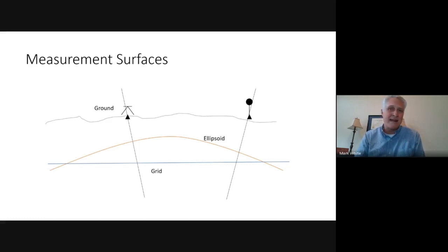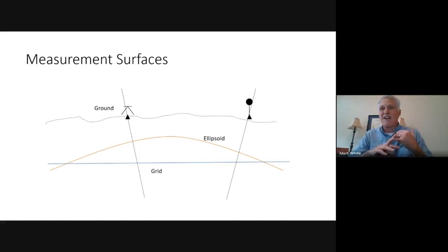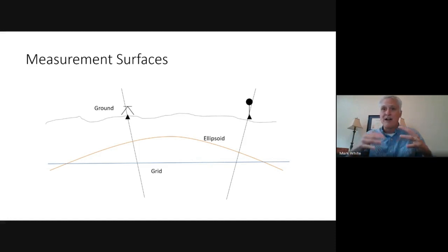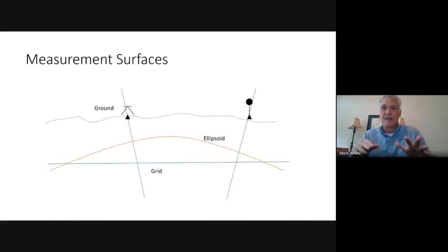To make the math easier for drawing maps so we can use Cartesian coordinates, we take that ellipsoid and flatten it out into a grid. That makes it easier because we can use X and Y to measure up and over to do our mapping. So three surfaces: the ground where we actually survey, the ellipsoid which is the mathematical model of the Earth that tries to best fit the ground, and then the flattened ellipsoid — the grid — which makes it easier to draw a map on a flat surface.